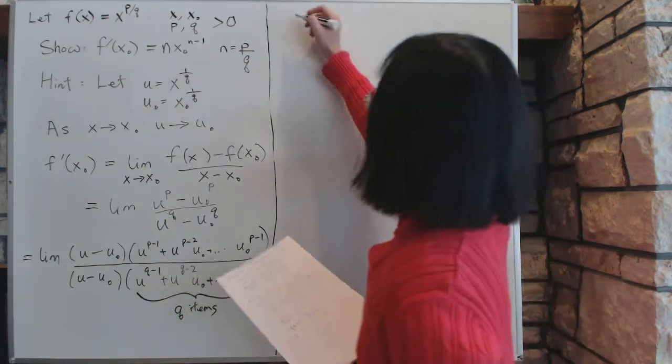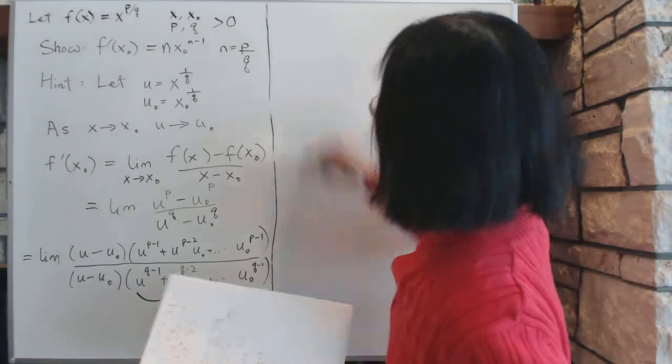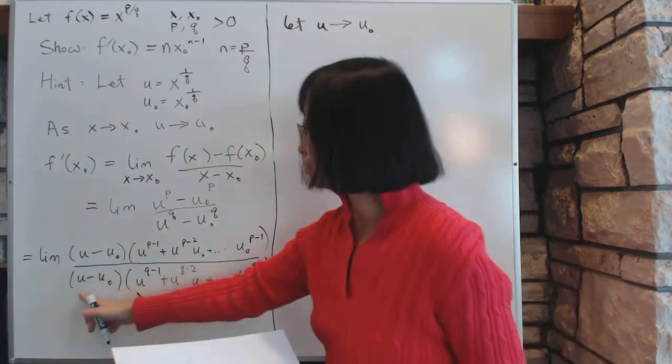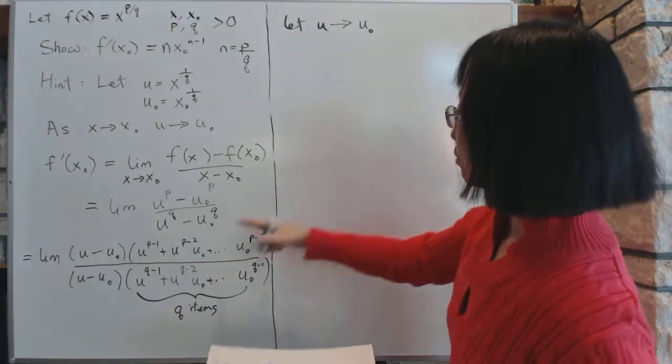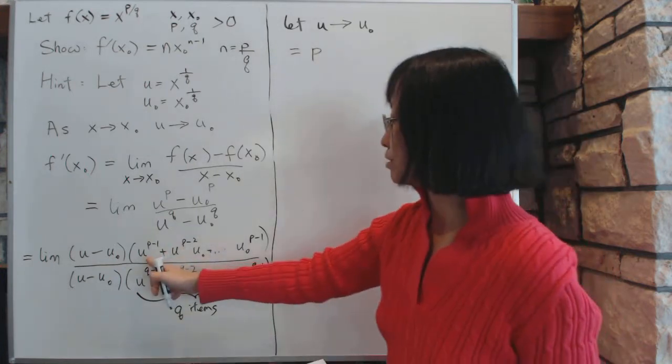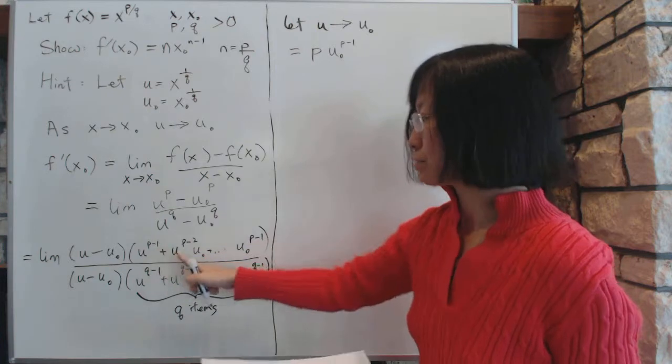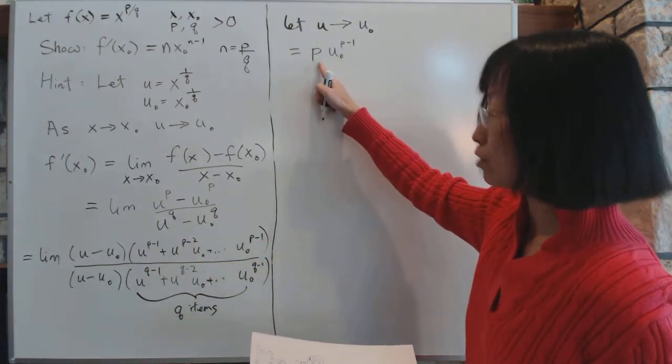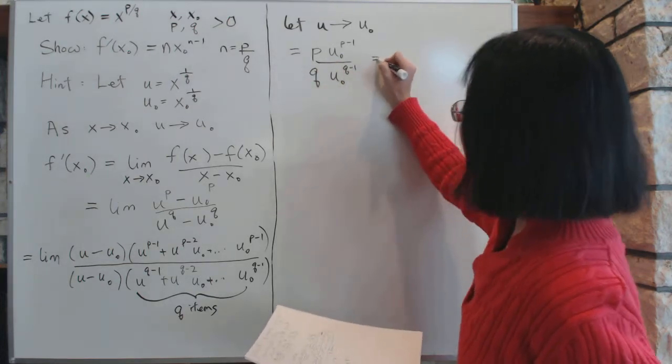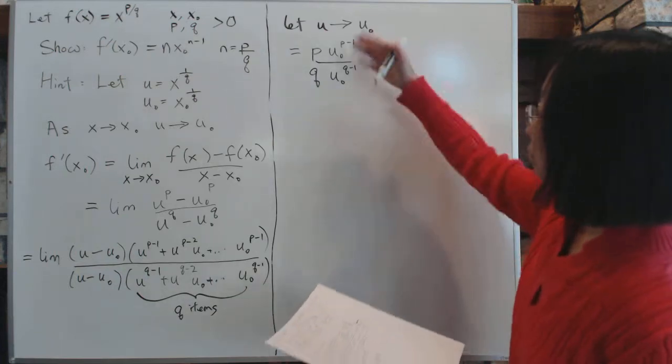Now the next step, so now we are doing the limit, so let's allow, so now let u approach u0. So if we let u go to u0, this stuff will cancel out. And then what we have left here is p items on top, and these items are all the same because u becomes u0. So each one becomes u0^(p-1), and we have p of them, each one of these things become that, and there's p of them total. And the same on the bottom, we have q times u0^(q-1), if you add up all this stuff, because u is u0 at this point.